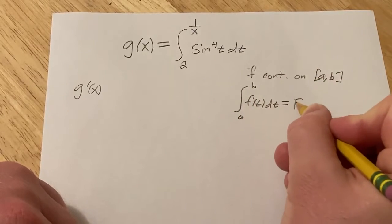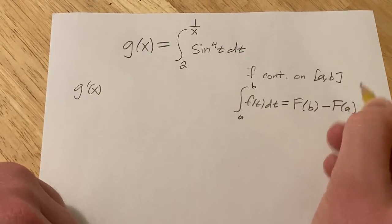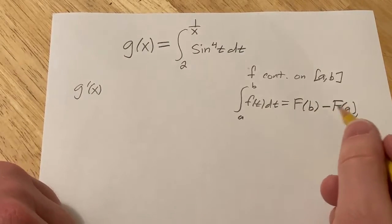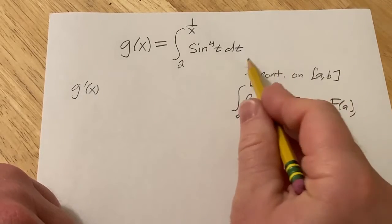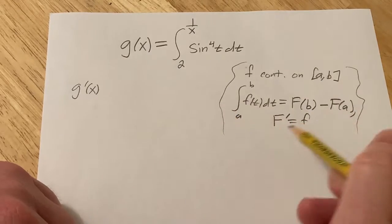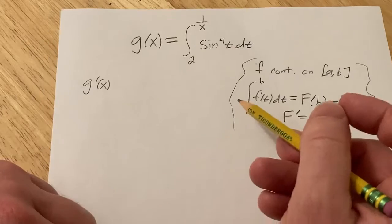this is equal to big F of b minus big F of a, where big F is what's called an antiderivative of little f. Basically that means that the derivative of big F is equal to little f. So this is the Fundamental Theorem of Calculus, the first Fundamental Theorem of Calculus. There's a second one as well.